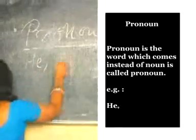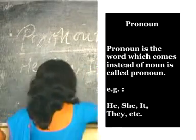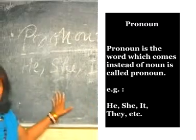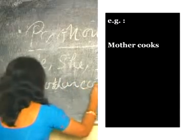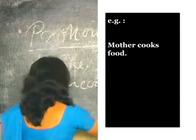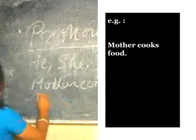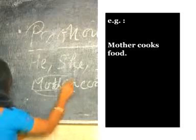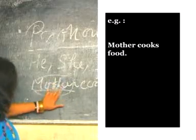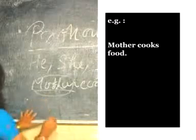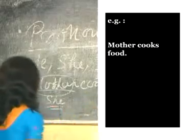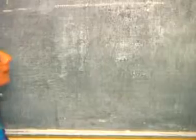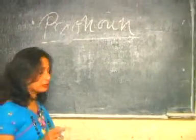Examples of pronouns are: he, she, it, they, etc. Suppose 'mother cooks food' — in this sentence, 'mother' is a noun. So instead of the noun 'mother', we use 'she': 'she cooks food'. So 'she' is a pronoun.